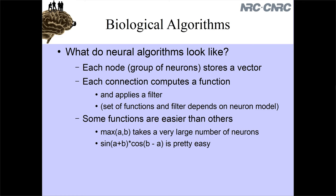From the stuff covered in the last lecture - what do neural algorithms look like? The idea is that each group of neurons works together to form a distributed representation of a numerical vector, a set of numbers. So you might have 100 neurons representing an XY value, a two-dimensional vector. And then each connection between groups of neurons, by adjusting the connection weights, can compute functions on those vectors.